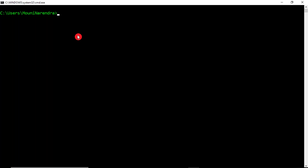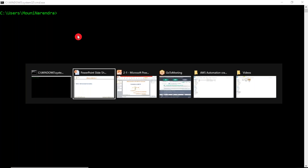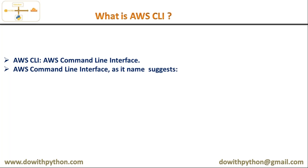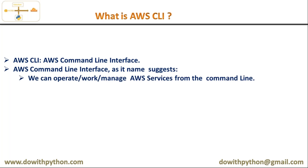Simply, a command line is used to work with your operating system. Same way, AWS CLI is the command line for your AWS — by using this command line you can work with your AWS services. As the name suggests, AWS Command Line Interface allows us to operate, work, and manage AWS services from the command line.